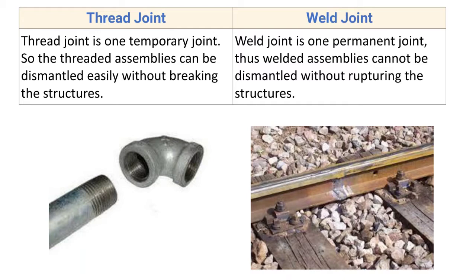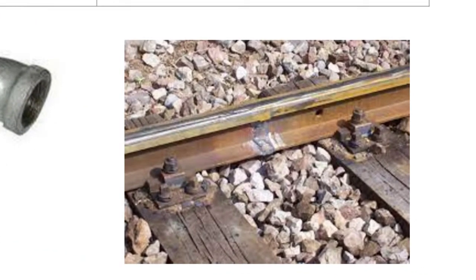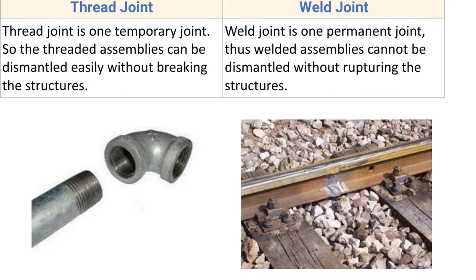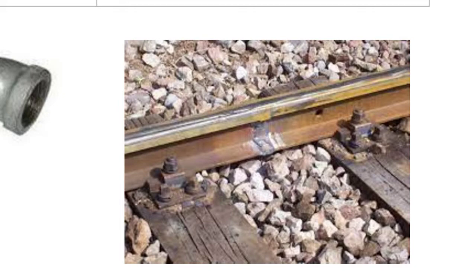Weld joint is a permanent joint; thus a welded assembly cannot be dismantled without rupturing the structure. This is an example of a welded joint — a permanent joint. Once the component is welded, it is permanently assembled together. When you want to separate the two parts, you have to rupture it.